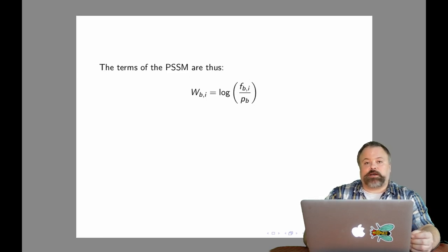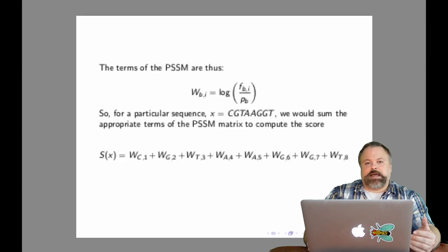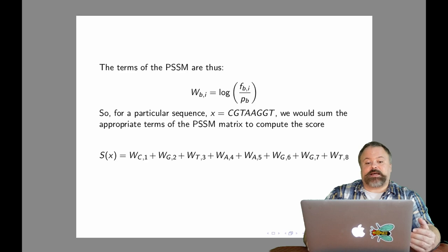The terms of that matrix that we're summing up are essentially what's called a PSSM. This W sub bi matrix is the log likelihood ratio of F sub bi over P sub bi, our motif frequency matrix divided by our background probabilities. When we want to score a particular sequence X, we're simply summing over the corresponding terms of this matrix. For this particular sequence right here, we have to sum W sub C1 because there's a C at position 1, W sub G2 because there's a G at position 2, and so on, getting this cumulative sum.